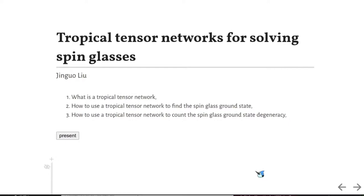What is a tropical tensor network? How to use a tropical tensor network to find the ground state energy of a spin glass? And how to use a tropical tensor network to count the ground state degeneracy?